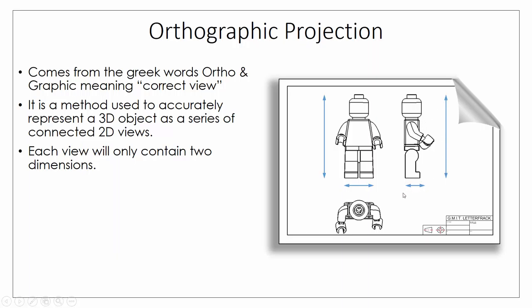Looking from above gives width and depth but no information about height. For orthographic views we need at least a minimum of two views to accurately represent the object, and generally speaking we include three just to give a full, easier-to-read impression of the object.